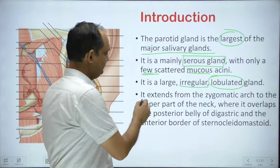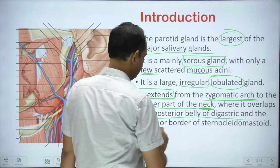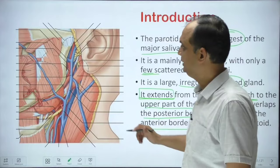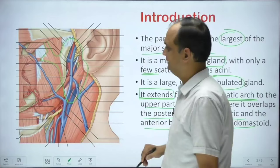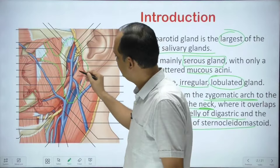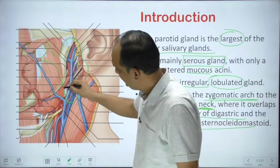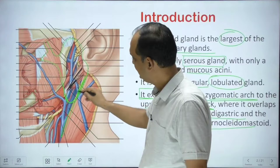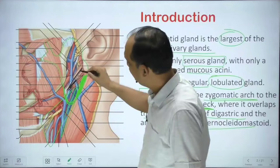When you see the extension of the parotid region, it extends from the zygomatic arch to the upper part of the neck, where it overlaps the posterior belly of the digastric and the anterior border of sternocleidomastoid. The black outline in the diagram shows the area where you will find this parotid gland. The gland overlaps the posterior belly of digastric and approaches into the lower part of the neck, and anteriorly it overlaps the masseter muscle.